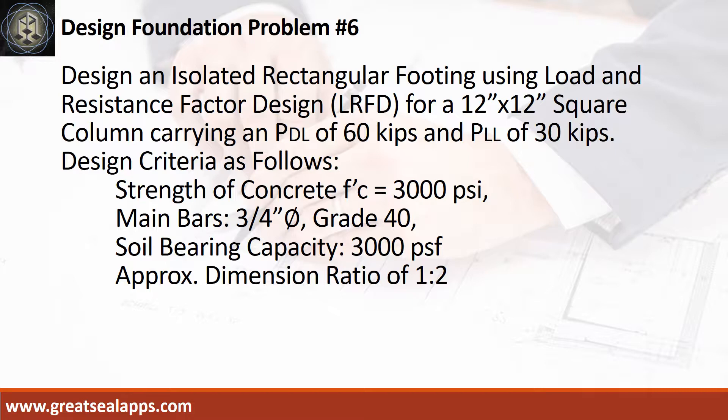Design an isolated rectangular footing using Load and Resistance Factor Design for a 12-inch by 12-inch square column carrying an actual dead load of 60 kips and actual live load of 30 kips. Design criteria: strength of concrete 3,000 psi, main bars 3/4-inch diameter grade 40, soil bearing capacity 3,000 PSF, and approximate dimension ratio of 1 to 2.